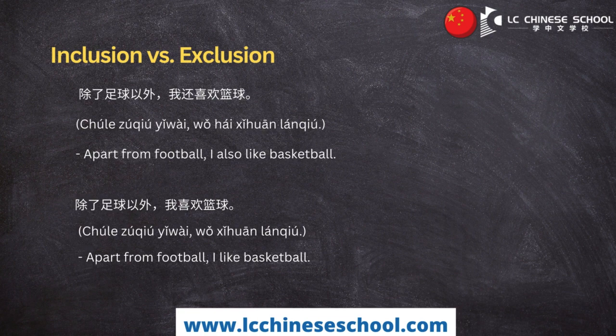When 除了…以外 is used with 还 (hái) or 也 (yě), meaning 'also' or 'too', it implies the inclusion of the item mentioned after 除了. This conveys that other elements are also involved, in addition to the stated element.